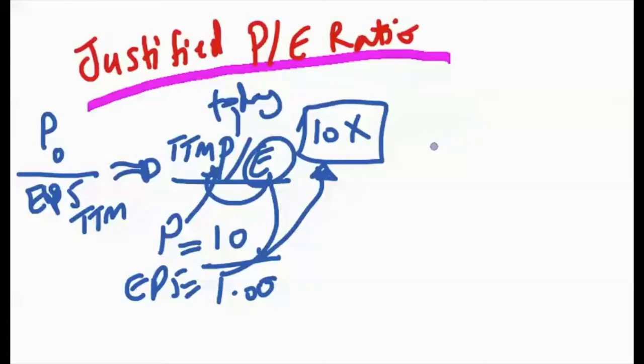The question now becomes: is the 10 P/E ratio fair enough for the stock? Should it be trading at 12, should it be trading at 8 times? What's the real fair value or the fair P/E ratio, so to speak, for the stock? This is what we call justified P/E ratio.